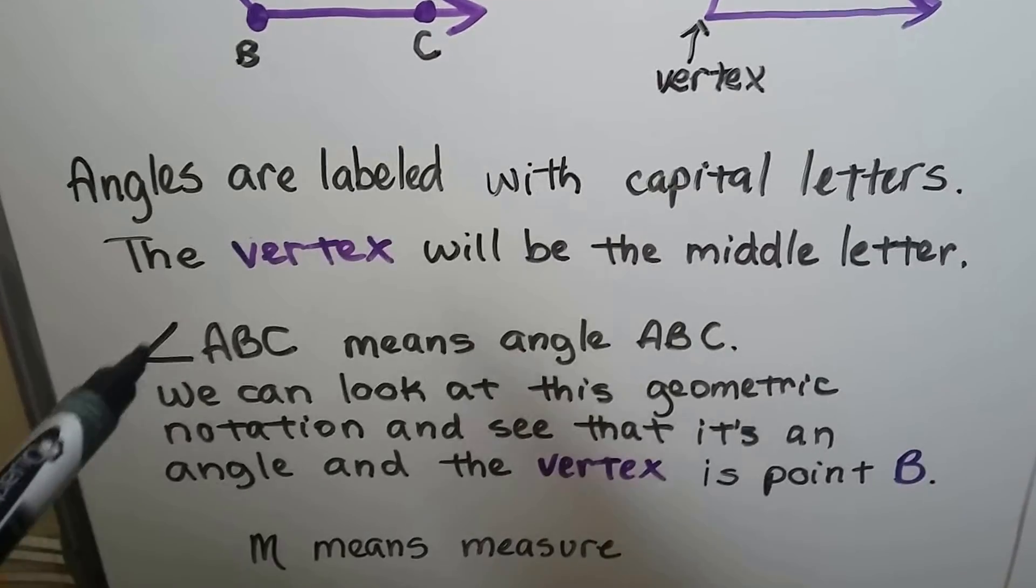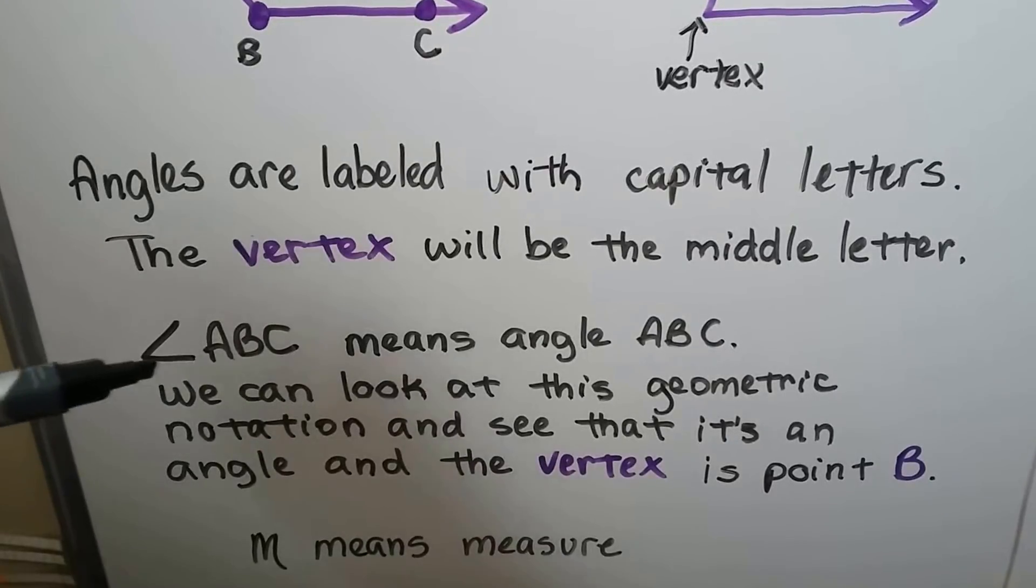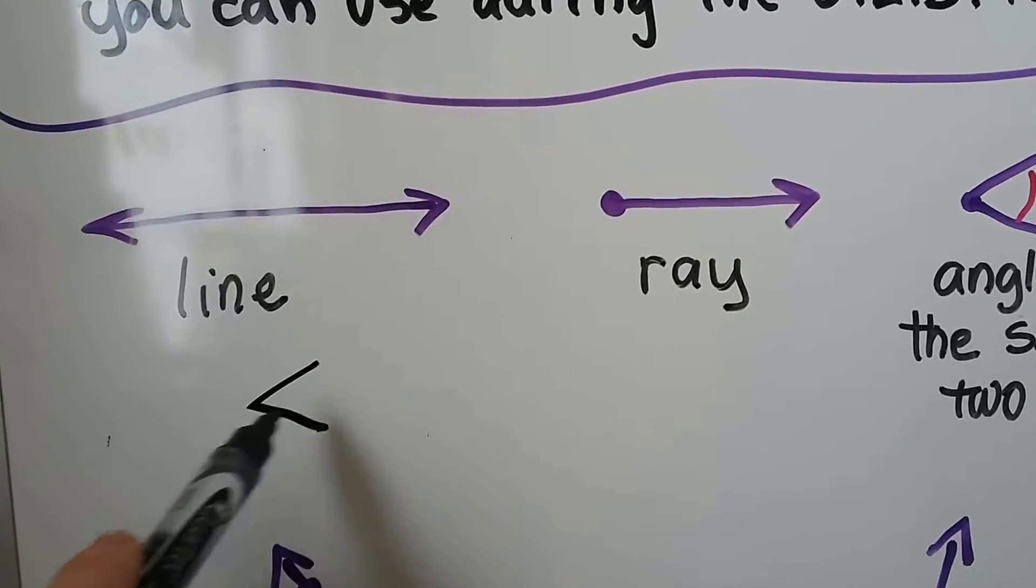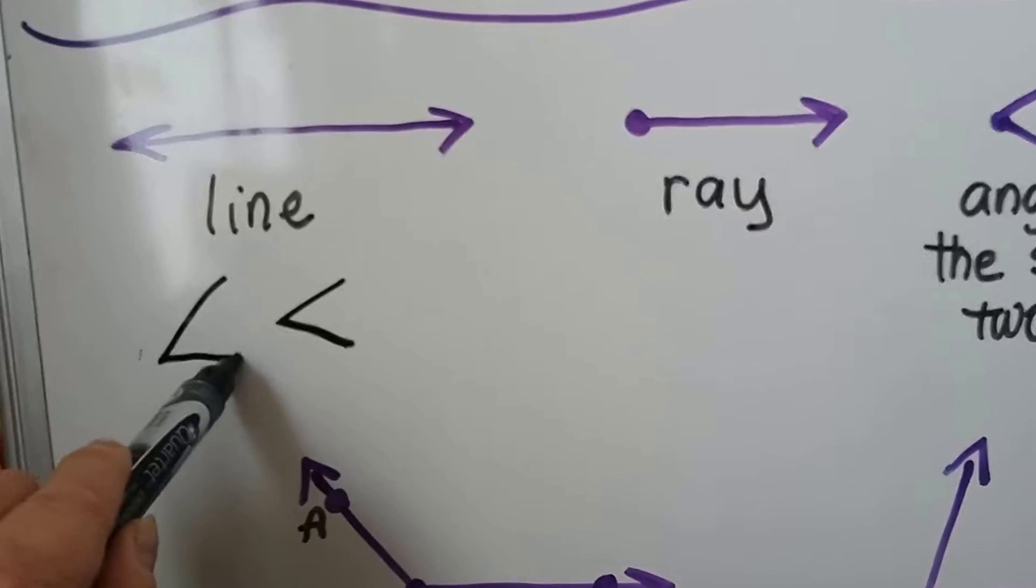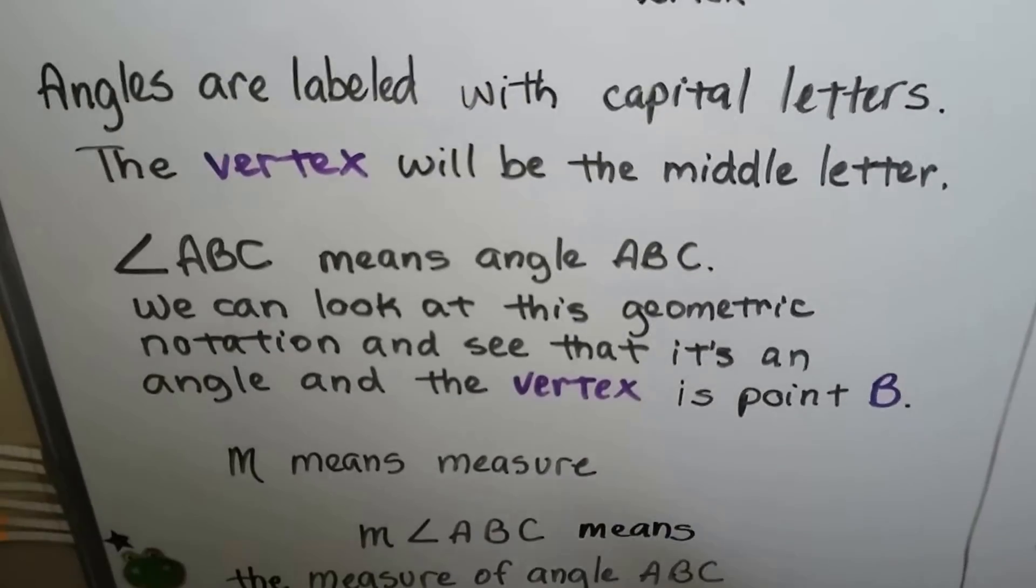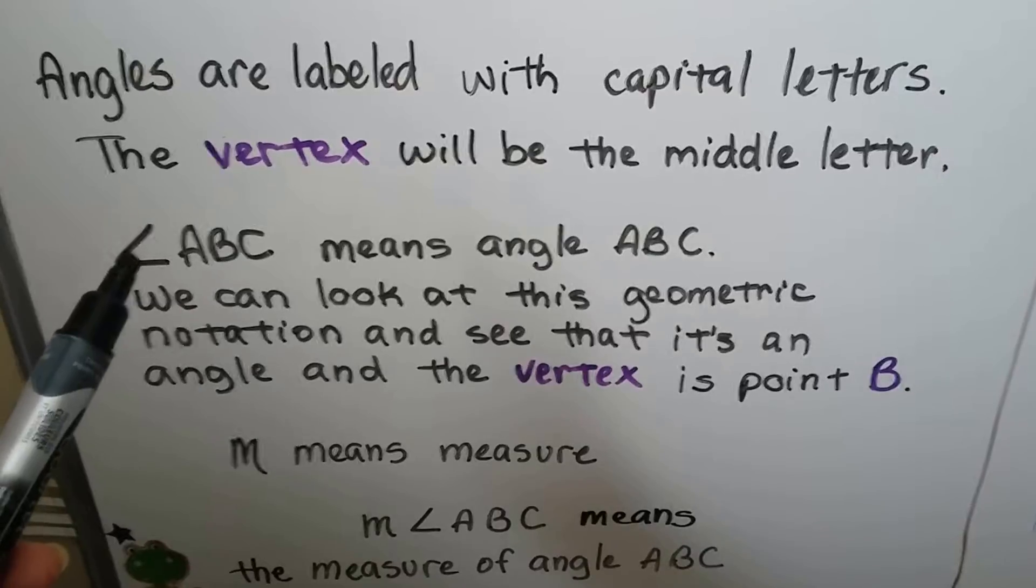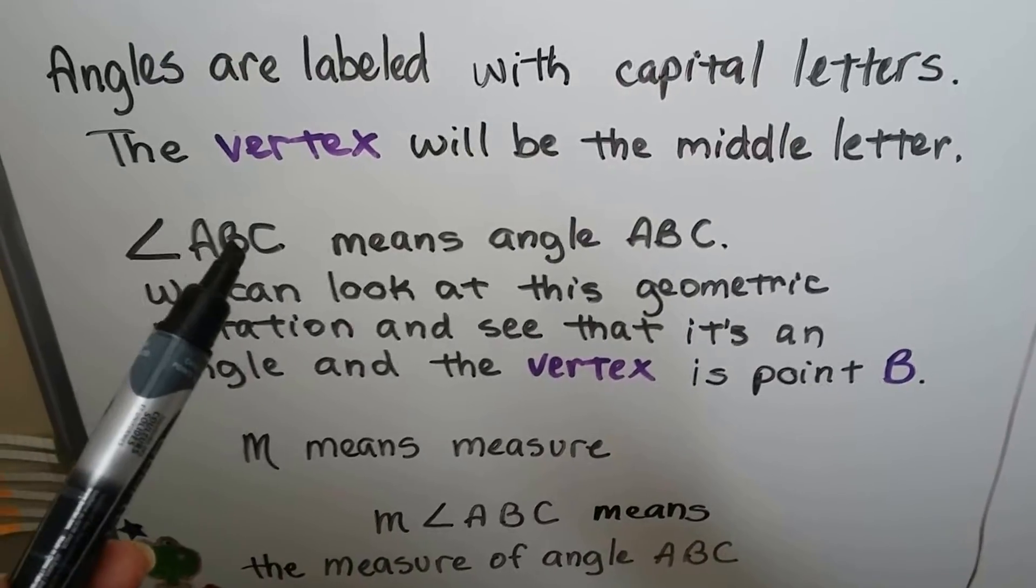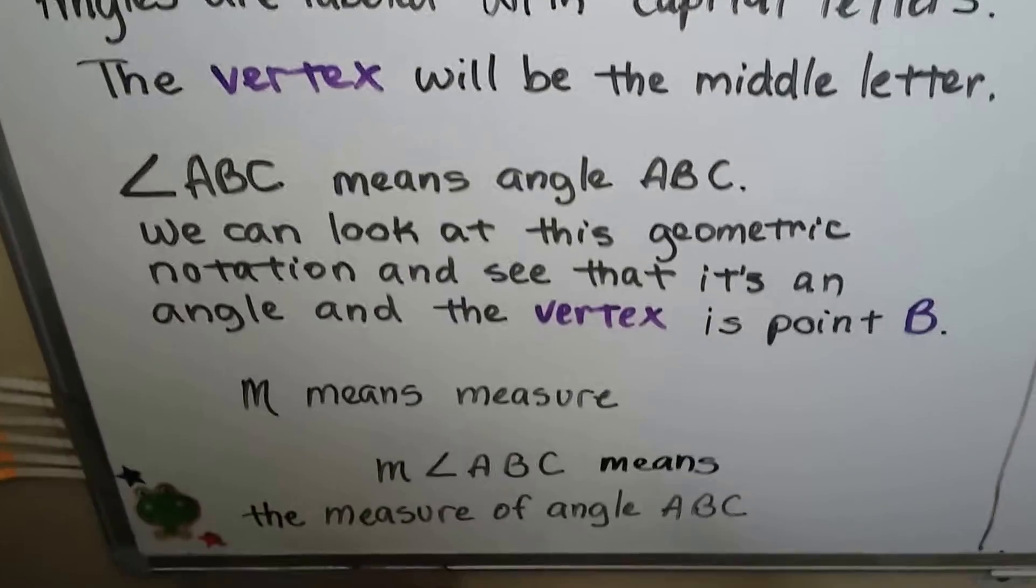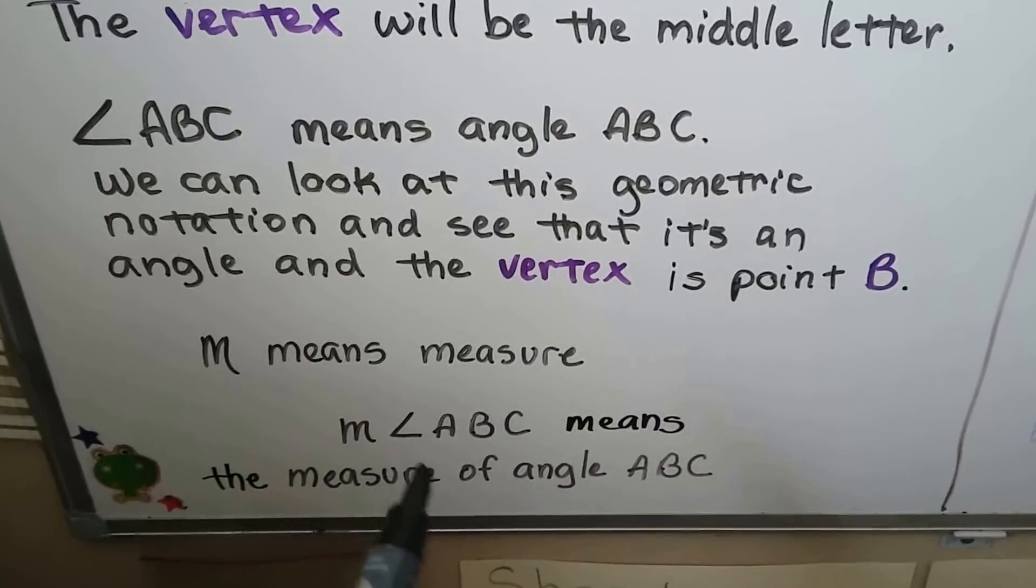When you see this little shape like this, it sort of looks like a less than, except it's laying flat on the line. Less than slopes like that. This is more like this, where it's laying flat on the bottom. When you see that, this means angle A, B, C. We can look at this geometric notation and see that it's an angle and that the vertex is point B because that's in the center. When you label them, the vertex goes in the center. When you see a little M, that means measure. So this means the measure of angle A, B, C.